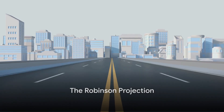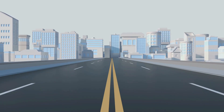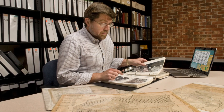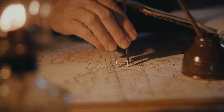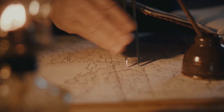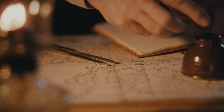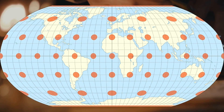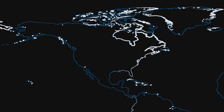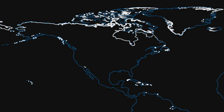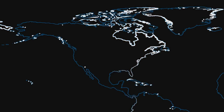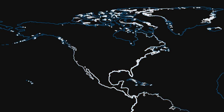The Robinson projection, a favorite among geographers, strikes a balance between size and shape. This projection, introduced by Arthur H. Robinson in 1963, was designed to provide a more realistic view of our world, with minimal distortion of both size and shape. The Robinson projection's main strength lies in its balanced representation. It offers a view that is neither too stretched nor too squished, enabling us to visualize countries and continents in a way that is closer to how we perceive them in reality.